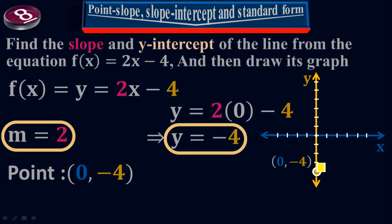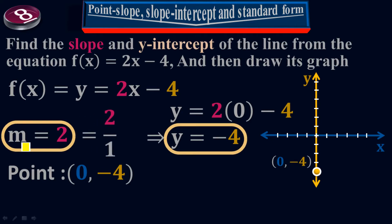How do you identify the second point? To identify the second point, we use the slope of the line. The slope says rise over run — rise is the change in y and run is the change in x. Since m equals 2, I can write 2 equals 2 over 1. So rise is 2 and run is 1. I go 2 units up along the y-axis and 1 unit along the x-axis, and that gives me my second point.